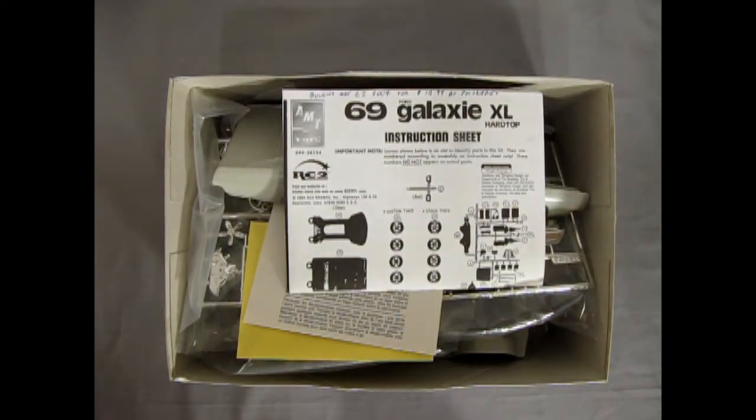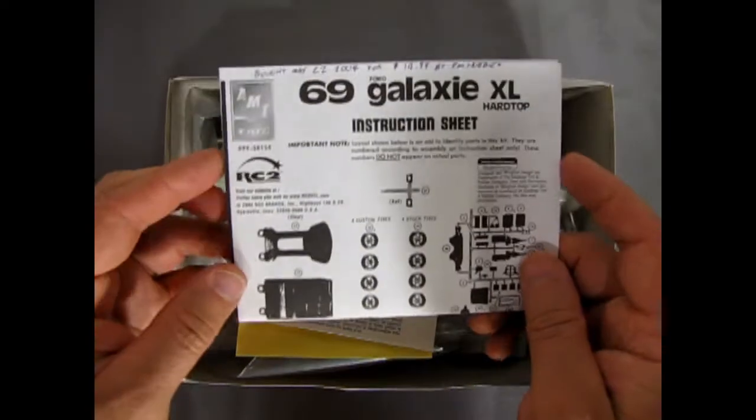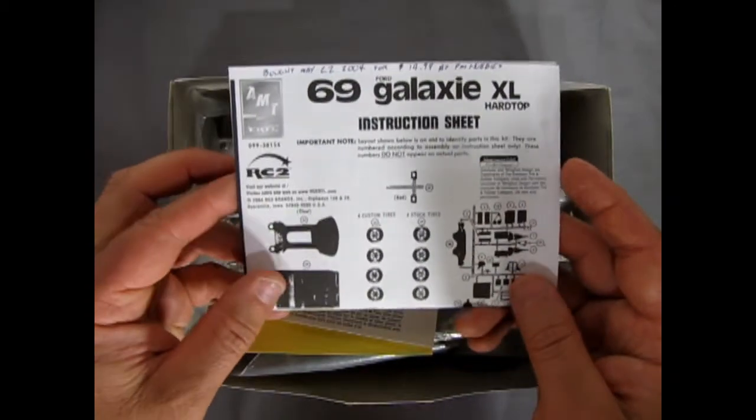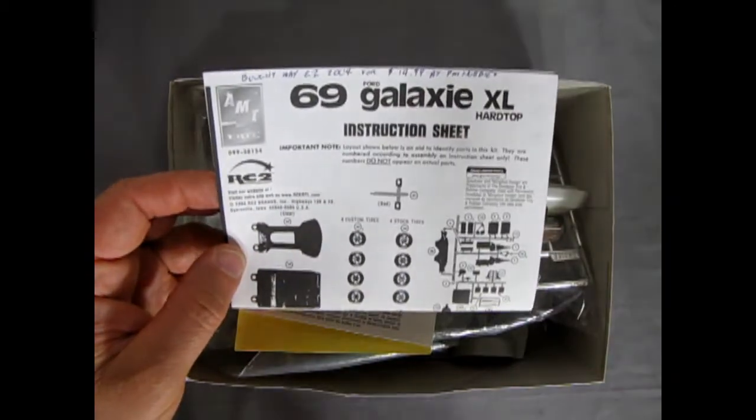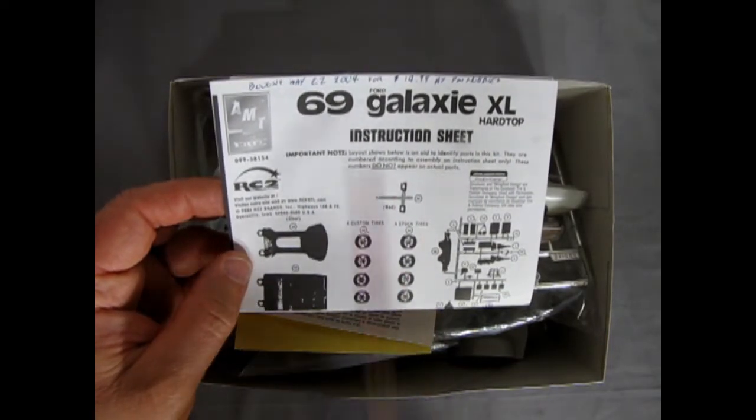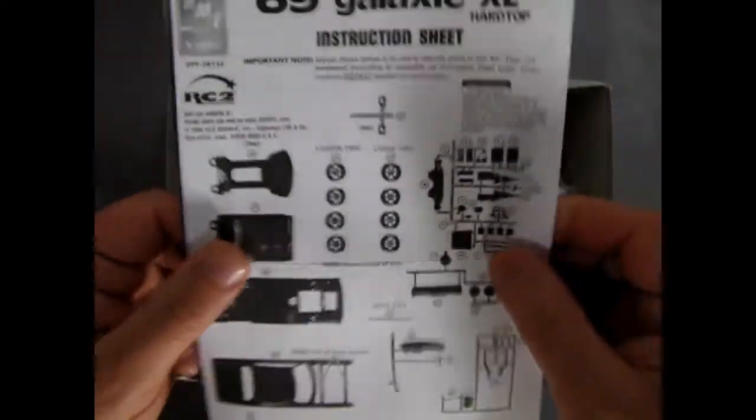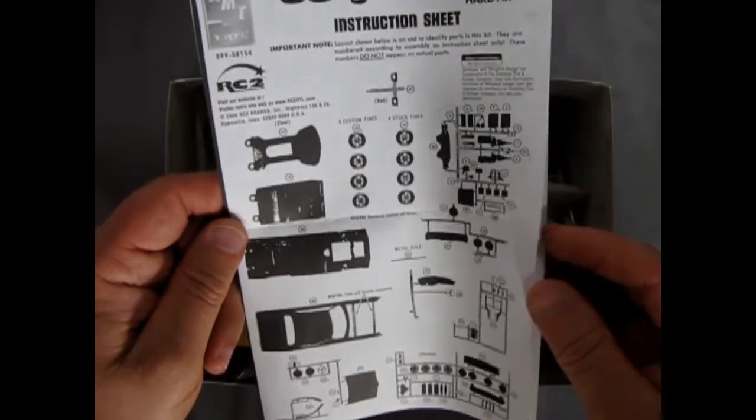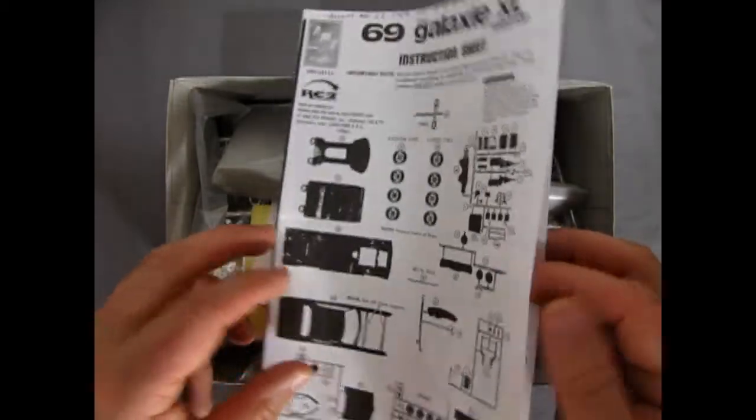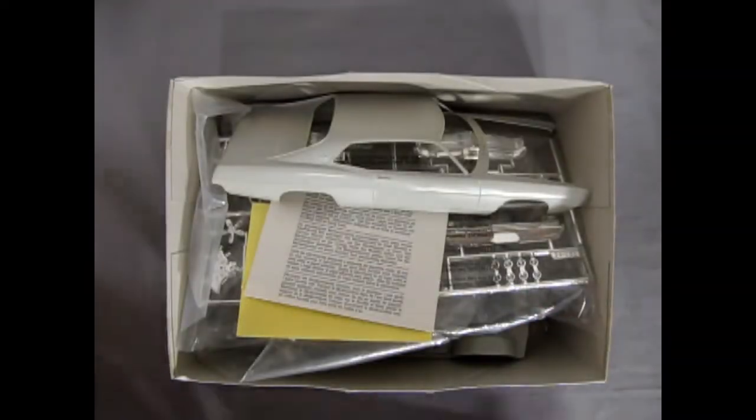We lift off the box top and what do we find inside? We find the very basic 69 Galaxy XL hardtop instruction sheet. And there was a Buick that came out, 66 I think. It's got the same kind of instructions, which I do believe is 69 Riviera, if memory serves me right. Of course you can see it's just very basic. We're getting the instructions in a bit.